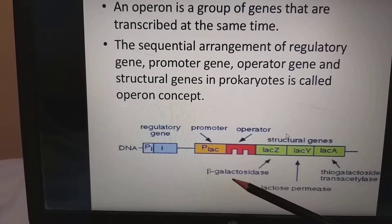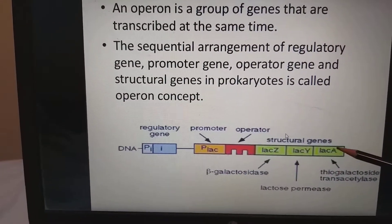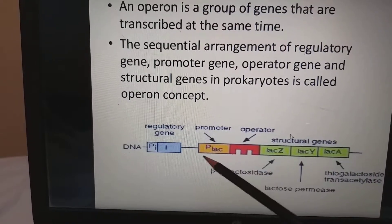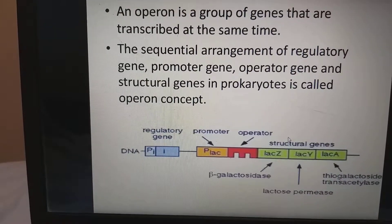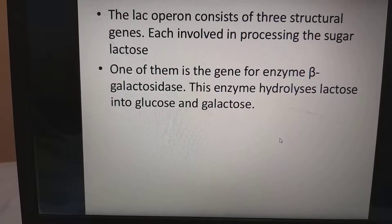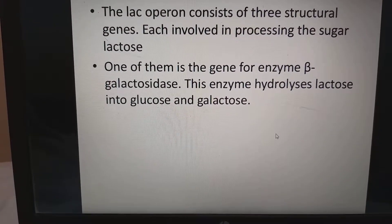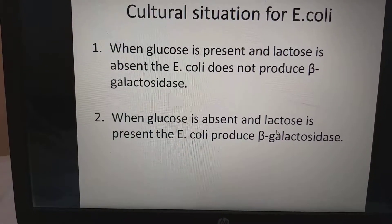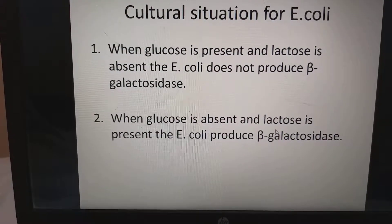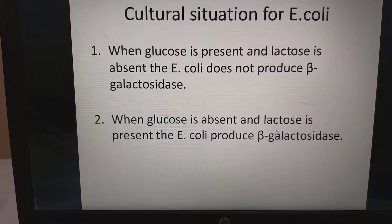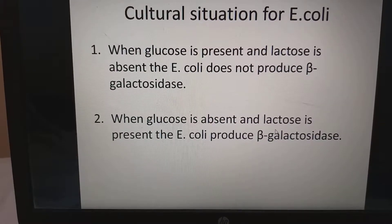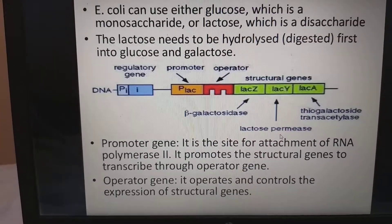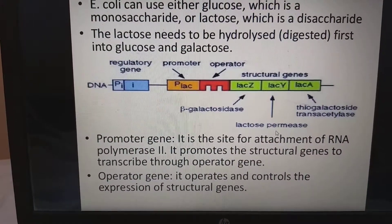The lac operon consists of three structural genes, each involved in processing the sugar lactose. LacZ codes for the enzyme beta-galactosidase, LacY codes for lactose permease, and LacA codes for thiogalactoside transacetylase. The gene beta-galactosidase hydrolyzes lactose into glucose and galactose. For Escherichia coli: when glucose is present and lactose is absent, E. coli does not produce beta-galactosidase; when glucose is absent and lactose is present, E. coli will produce beta-galactosidase.